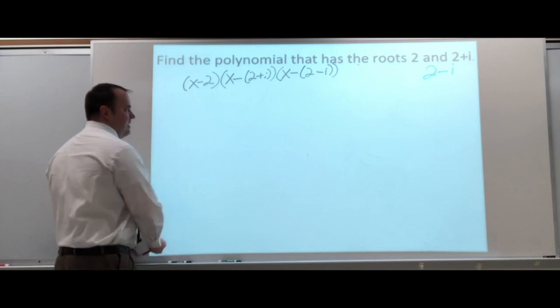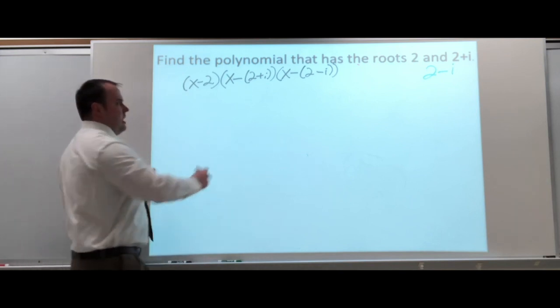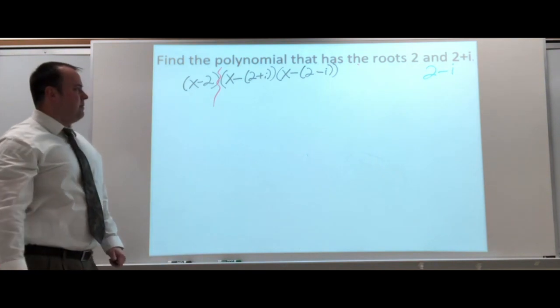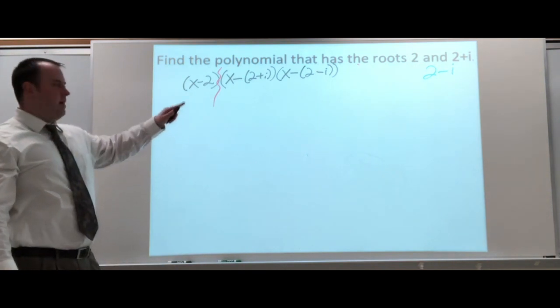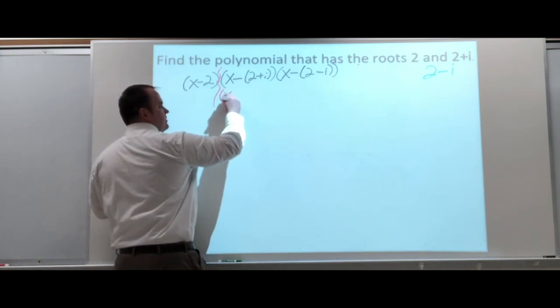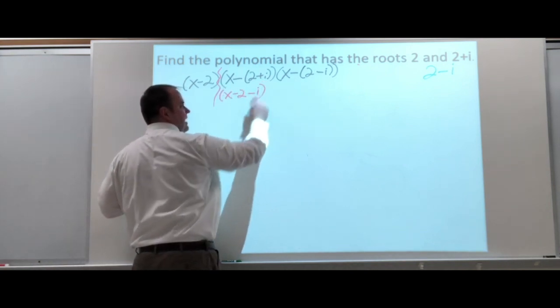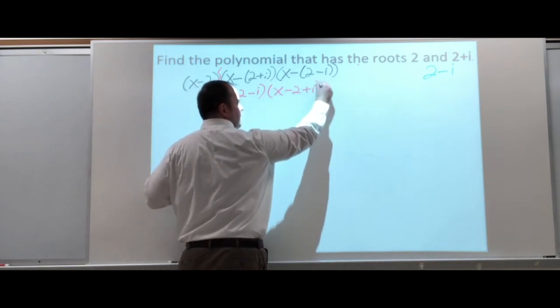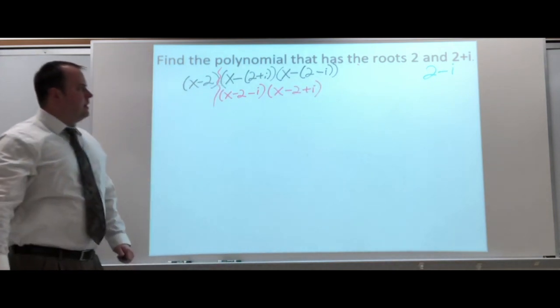Now, when I multiply these, again, I'm going to start with the conjugates. The 2 plus i and the 2 minus i. Now, the first thing I'm going to do, though, is get rid of some of those parentheses by distributing the negative sign. Now, X minus 2 minus i. X minus 2 plus i. So, this is going to get pretty big.